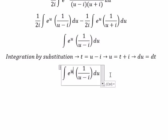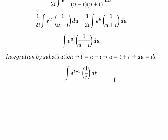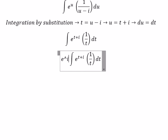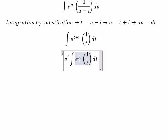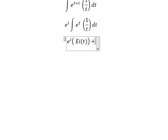So u we change to t plus i, and du we change to dt. We can factor out e to the power of i, and we get e to the power of t. The integral of e to the power of t over t gives us the exponential integral of t, plus constant C.